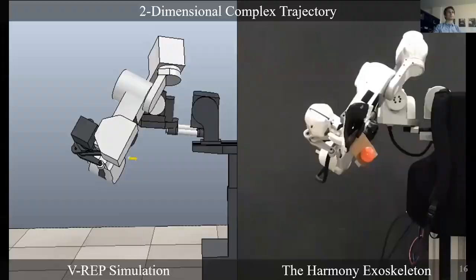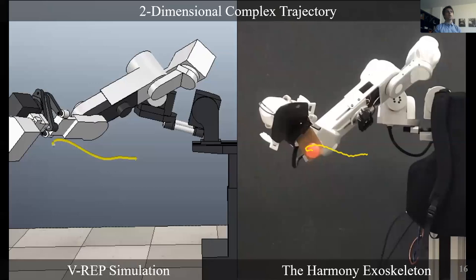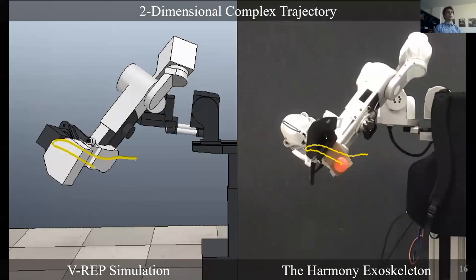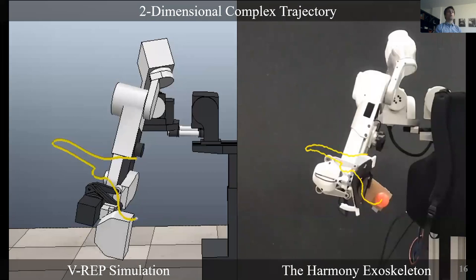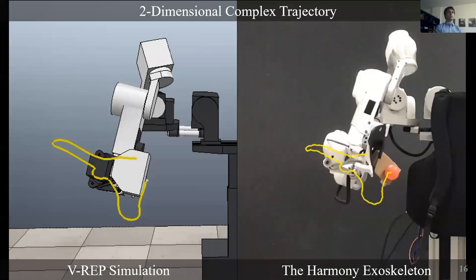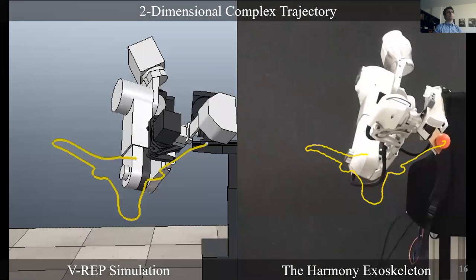Now, as I mentioned before, we also tried to perform some complex trajectories both in 2D and 3D with a VREP simulator that you can see on the left and with the Harmony robot on the right. We can actually see that both the robot and the simulator were able to follow the complex trajectory that we computed with the method. On the right, you can see that there are some errors and vibration. These are only due to the low stiffness parameter of the impedance controller of the Harmony robot that is kept very low to avoid to harm the user.